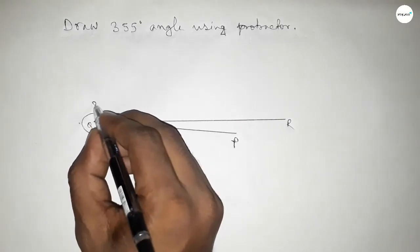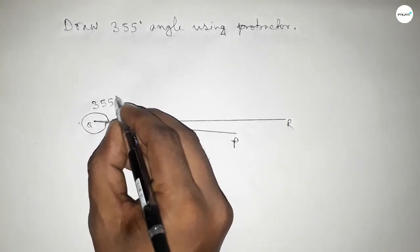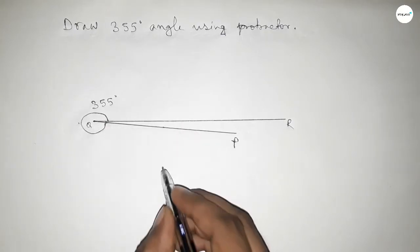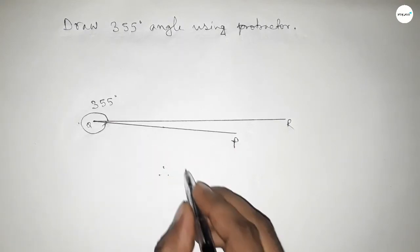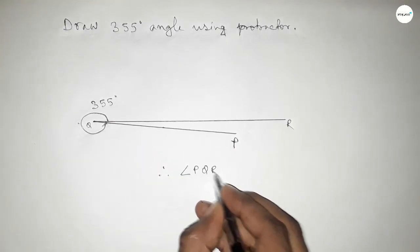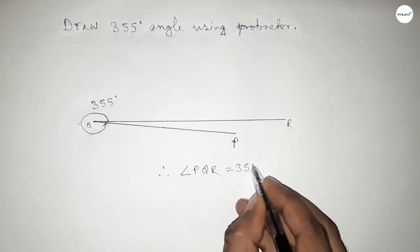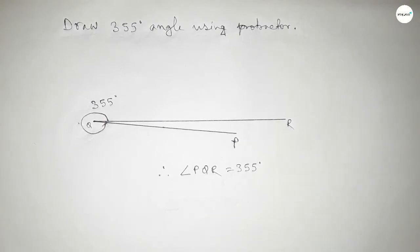So this is 355 degree angle. Therefore, angle PQR equals 355 degrees. That's all, thanks for watching. If this video is helpful to you then...